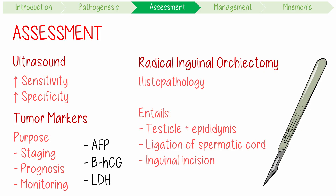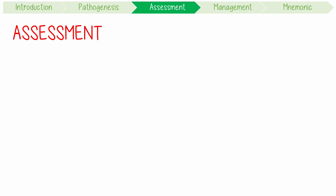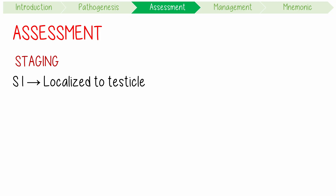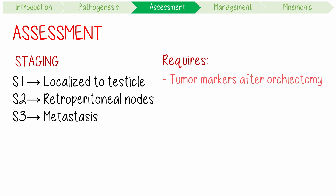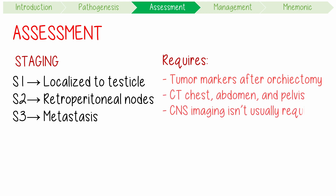A trans-scrotal or percutaneous approach can result in metastatic seeding. For TNM staging: S1 is tumour localised to the testicle, S2 is retroperitoneal lymph node involvement, S3 is distant metastases. Staging requires tumour markers, but only after orchidectomy. Staging also requires a CT of the chest, abdomen, and pelvis, but CNS imaging isn't usually required. PET scans don't have a role in initial staging.